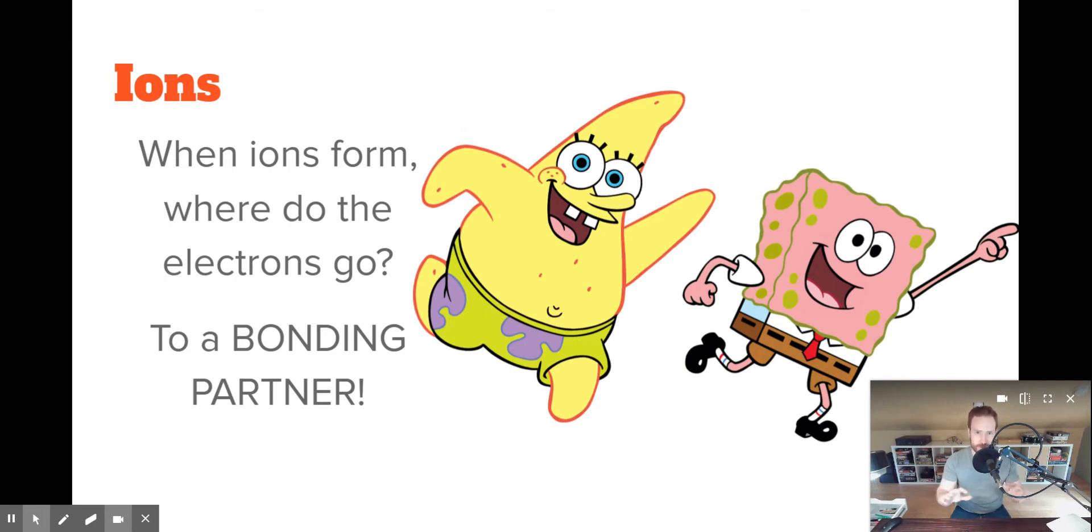And of course, atoms don't actually have desires or anything. I'm giving them emotions they don't have, but that's kind of how I talk about it. So, some atoms want to gain electrons. Some atoms want to give electrons away. But where do those electrons go, and where do those electrons come from? Where do they come from? Where do they go, Electron Joe?